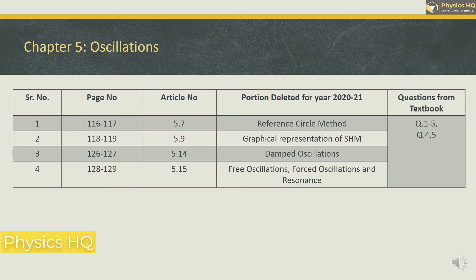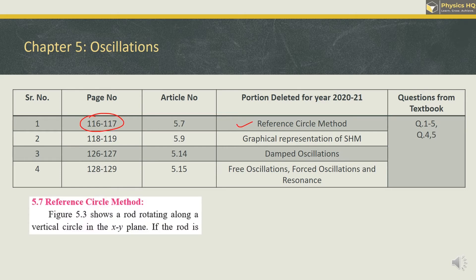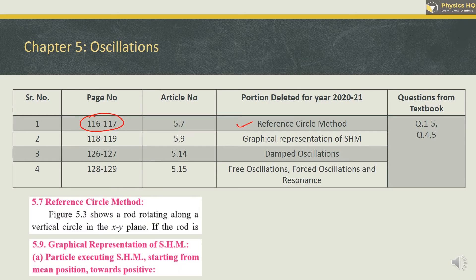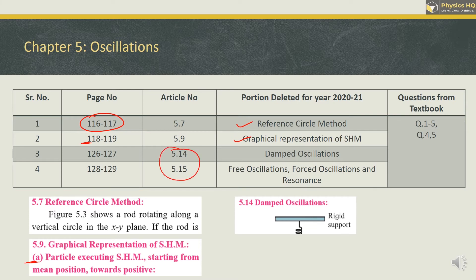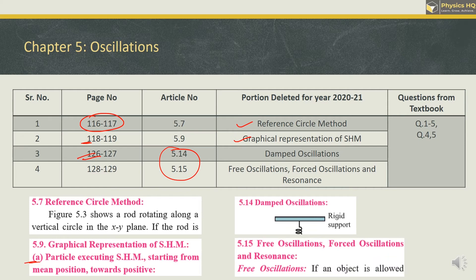In Oscillations, section 5.7 — the reference circle method — on pages 116-117 is deleted. Graphical representation of SHM on page 118 is also deleted. Damped oscillation and forced oscillation, which are the last topics, are deleted — you will not do these from page 126 to the chapter end. For questions, one MCQ — the fifth one — and question numbers 4 and 5 can be skipped.